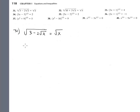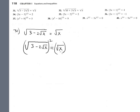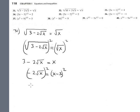Problem 31: copy the equation. We have the square root of 2 minus 2 times the square root of x, equals x, plus 9 on the other side. Squaring and applying FOIL gives x squared minus 6x plus 9.